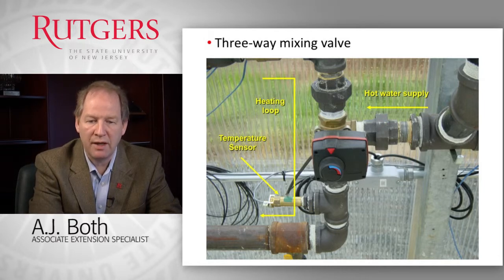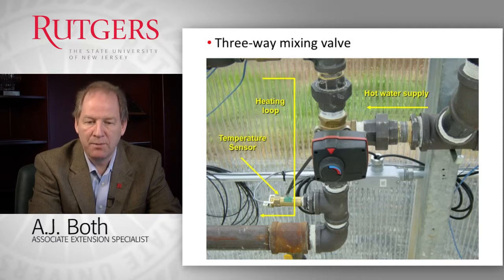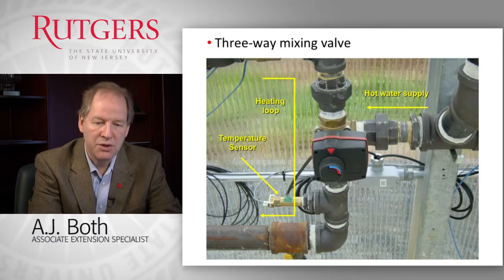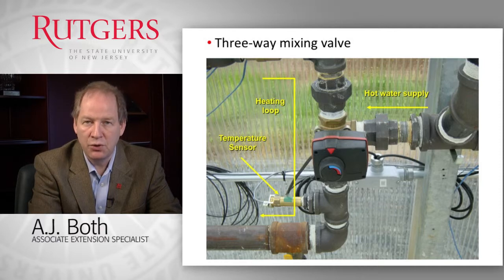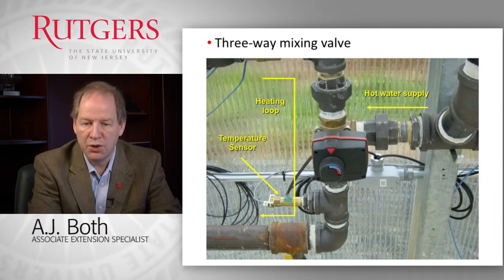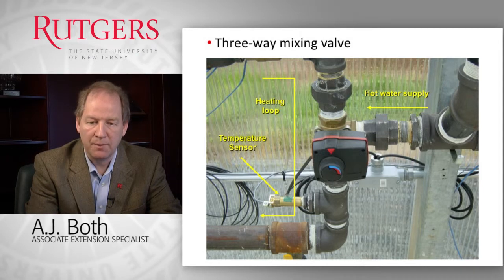Here's a close-up of a three-way mixing valve. Hot water is supplied by the boiler pump on the right-hand side. The three-way mixing valve is connected to a temperature sensor — typically for both water temperature and greenhouse environment. Depending on the control algorithm, the mixing valve opens or closes to allow more or less hot water into the zone to maintain the proper temperature. It's an easy system that allows for pretty precise temperature control.